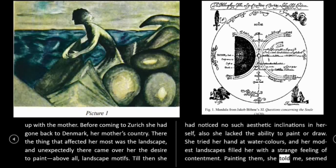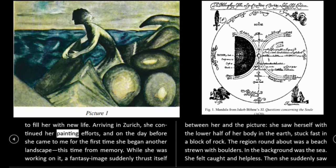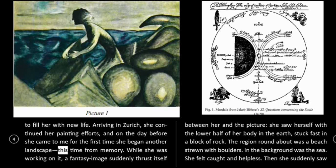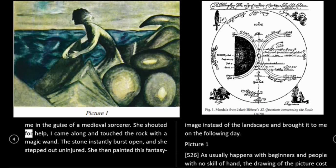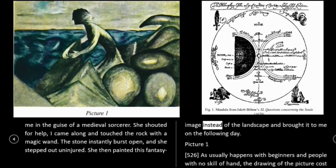Till then, she had noticed no such aesthetic inclinations in herself. Also she lacked the ability to paint or draw. She tried her hand at watercolors, and her modest landscapes filled her with a strange feeling of contentment. Painting them, she told me, seemed to fill her with new life. Arriving in Zurich, she continued her painting efforts, and on the day before she came to me, for the first time she began another landscape — this time from memory. While she was working on it, a fantasy image suddenly thrust itself between her and the picture: she saw herself with the lower half of her body in the earth, stuck fast in a block of rock. The region round about was a beach strewn with boulders. In the background was the sea. She felt caught and helpless. Then she suddenly saw me in the guise of a medieval sorcerer. She shouted for help; I came along and touched the rock with a magic wand. The stone instantly burst open, and she stepped out uninjured. She then painted this fantasy image instead of the landscape and brought it to me on the following day.